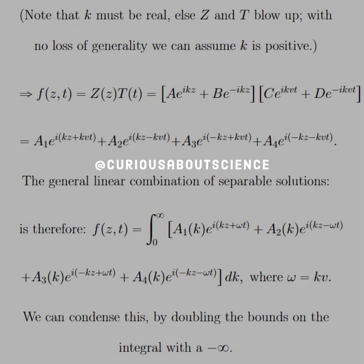We know the general linear combination of separable solutions is f(z,t) = integral from zero to infinity of [A₁(k)e^(i(kz+ωt)) + A₂(k)e^(i(kz-ωt)) + A₃(k)e^(i(-kz+ωt)) + A₄(k)e^(i(-kz-ωt))]dk, where ω = kv. We can condense this by doubling the bounds on the integral with negative infinity.